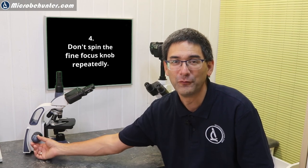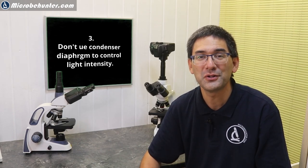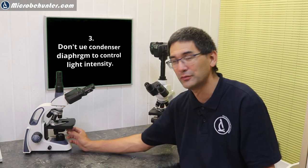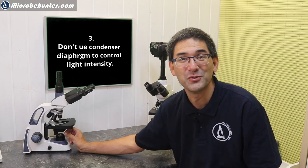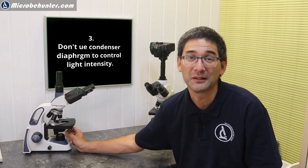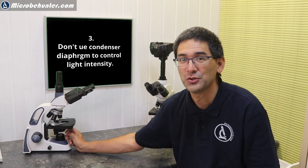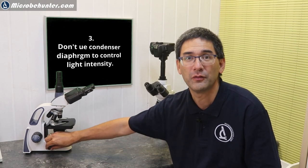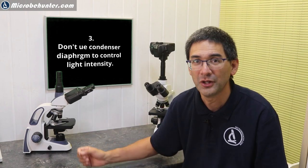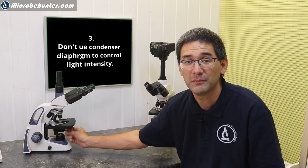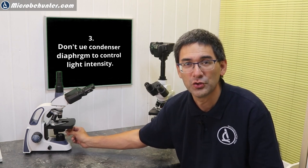The next one is another condenser problem: some people use the condenser to control light intensity. As I mentioned, moving the condenser lever opens and closes the diaphragm, which controls contrast and depth of field. But some people use this exclusively to control light. What you should do is use the light intensity knob on the side to increase light. Only if that's not enough should you open the condenser more. Strictly speaking, the condenser should be adjusted to correspond to the objective you're using.